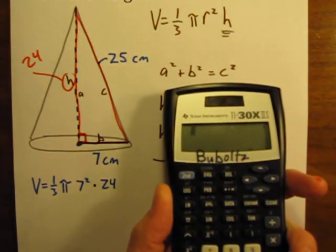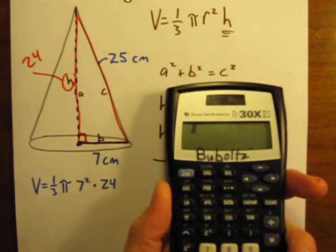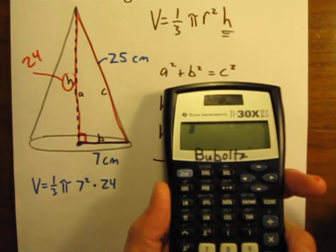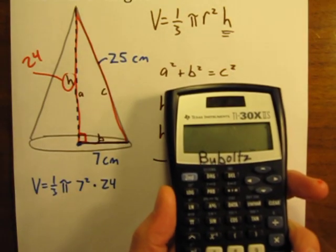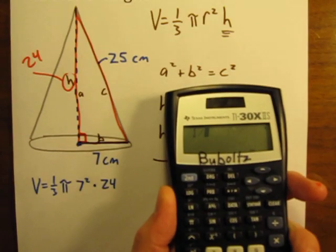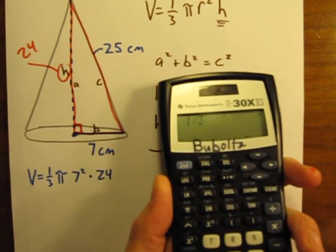So how do you enter one third into your calculator? Different calculators handle fractions differently. The way I like to do that is treat that as a little division problem. One third is really equal to 1 divided by 3. So, 1 divided by 3